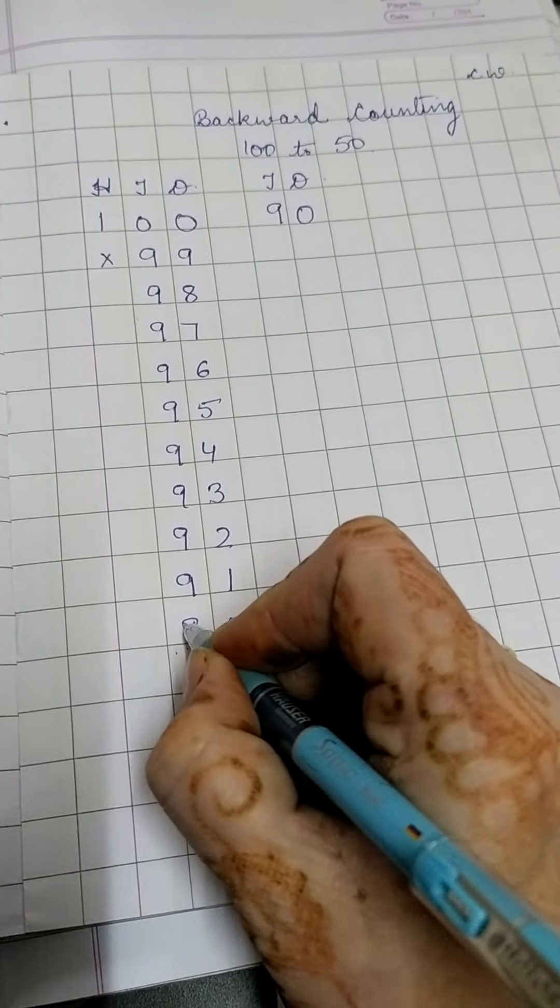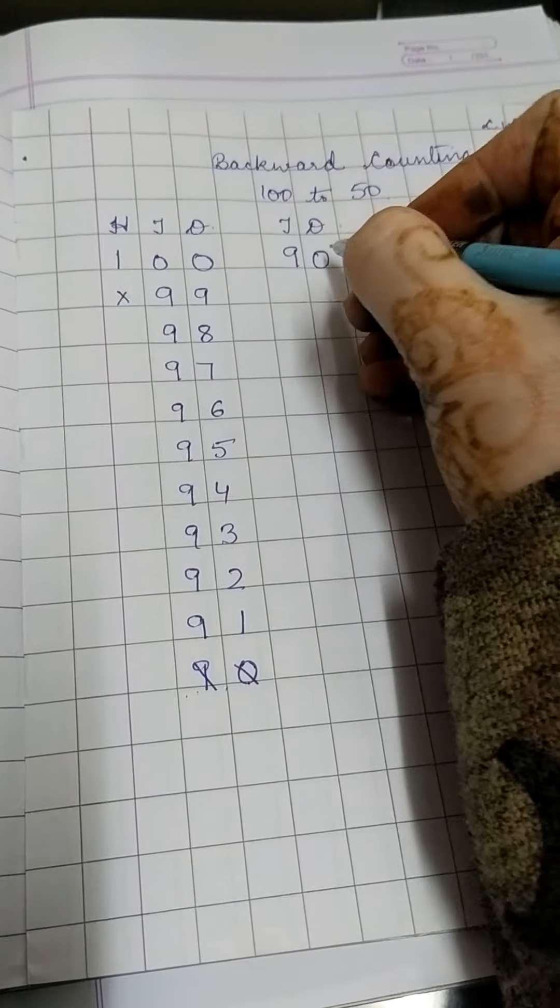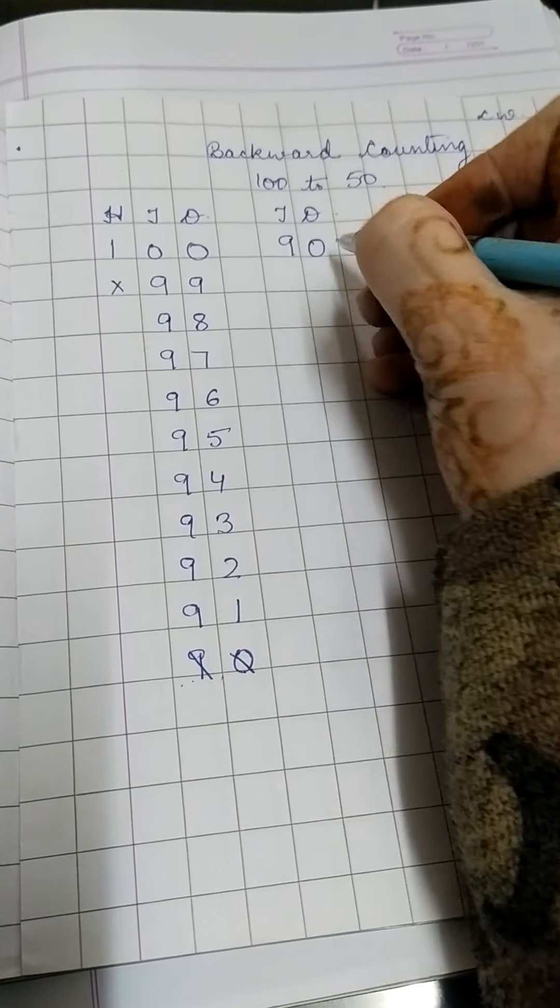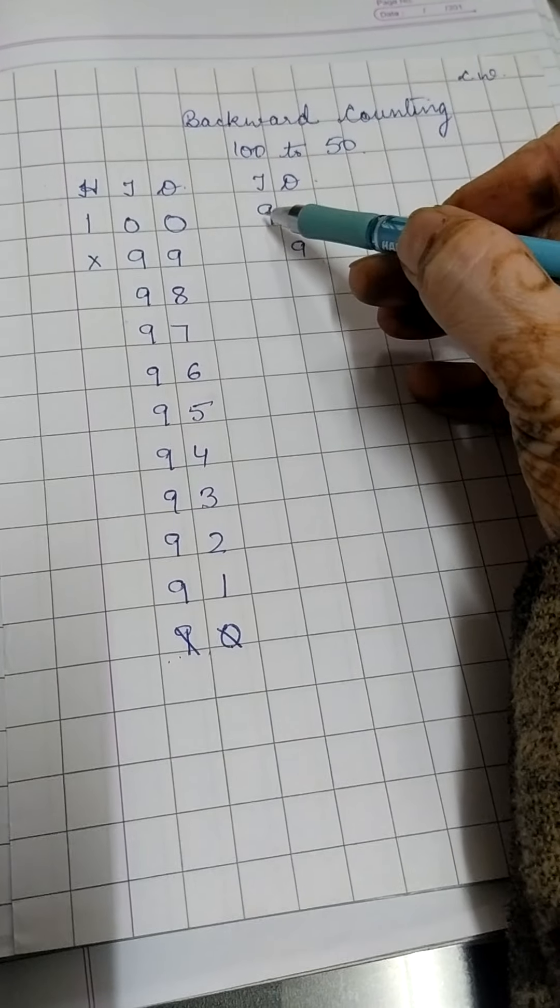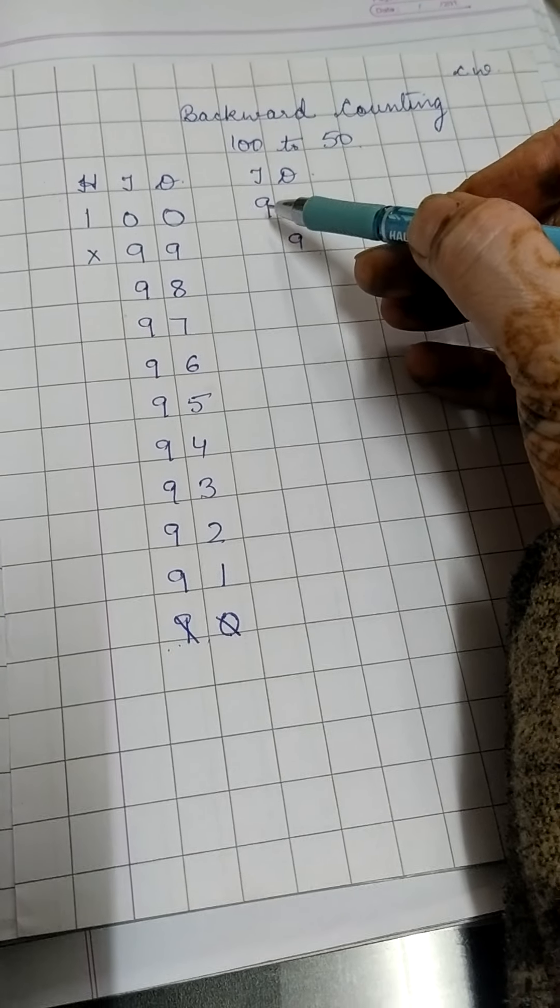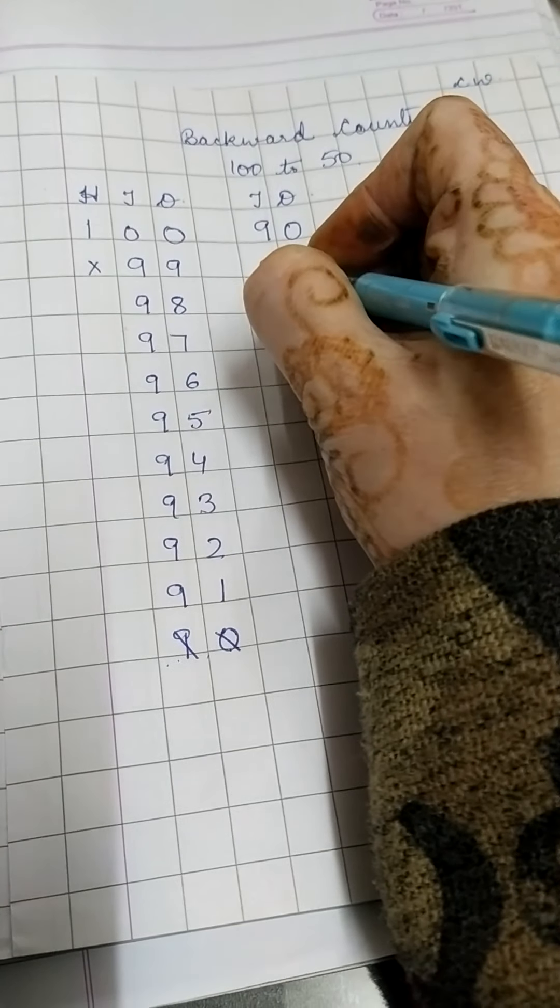In fact we should write 90 here. Don't write 90 here. Write down 90 here. Now before 90, again 0 is there. So here it will be 9. And before 9, what comes before 9? 8. So it will be 89.